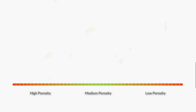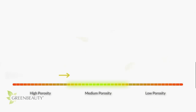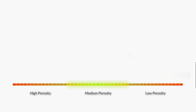For easier length retention, the medium section of this chart is pretty much the goal for both high and low porosity hair types. Naturally, high porosity hair types can only achieve this temporarily through a consistent regimen that constantly reinforces their cuticles. Low porosity hair types have to master how to slowly and gradually increase their porosity over time without causing too much damage.